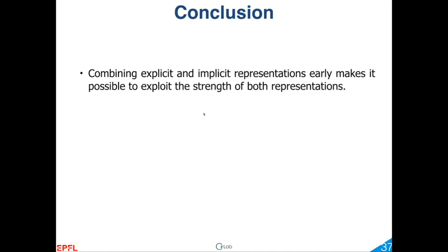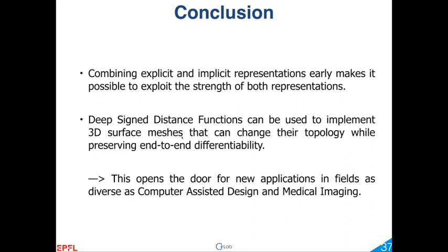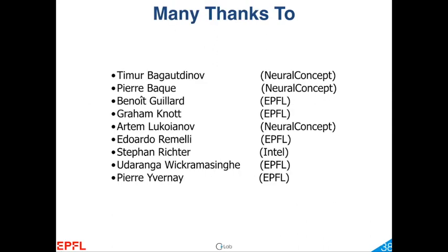In conclusion, we have a formalism that allows us to get the best of both worlds in terms of implicit and explicit representations, while preserving end-to-end differentiability. We use deep signed distance functions to implement 3D meshes that can change topology, and I think that opens the door to all sorts of interesting applications. I've talked a lot about CFD and mentioned medical imaging, but I'm sure there are quite a few others — this is something we could discuss at a later date. Of course, I have to thank a lot of students, former students, and postdocs in the lab who did all this work. Thank you very much.